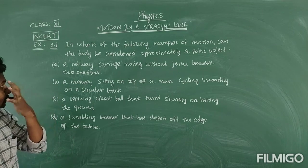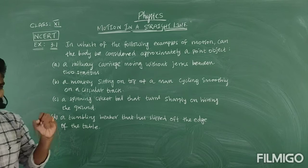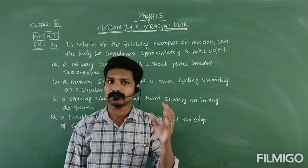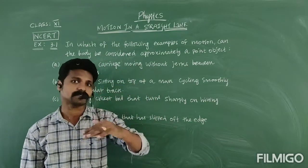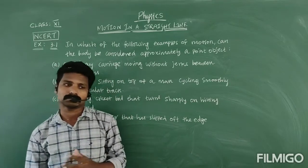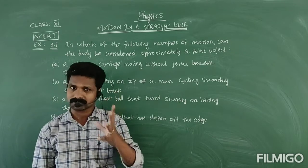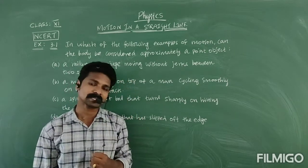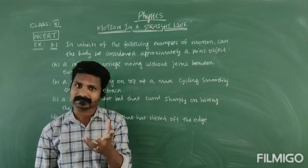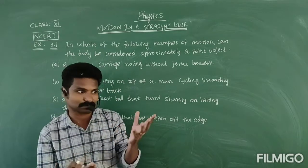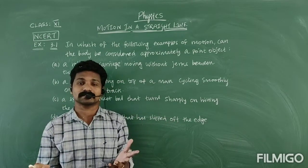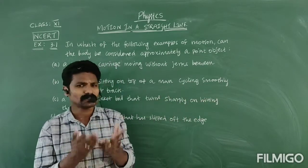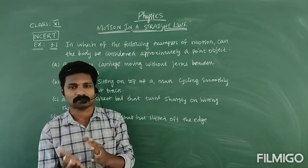From this question, you have to analyze whether it is a point object or not a point object. You have to analyze the specific situation, then you have to think. Sometimes you are thinking it is a point object, but it is not. Sometimes you are thinking it is not a point object, but actually it is. So in one situation, it is possible to say whether it is a point object or not.